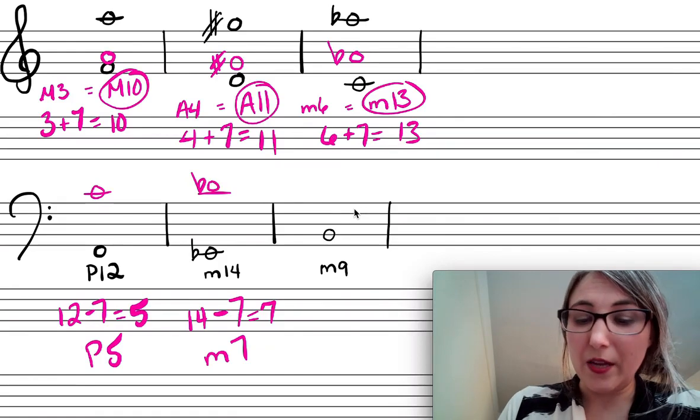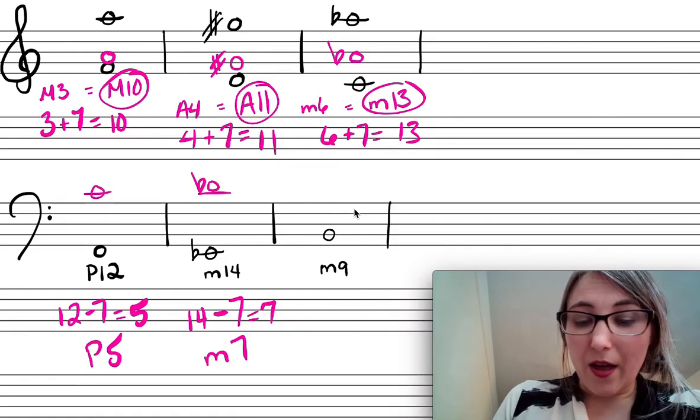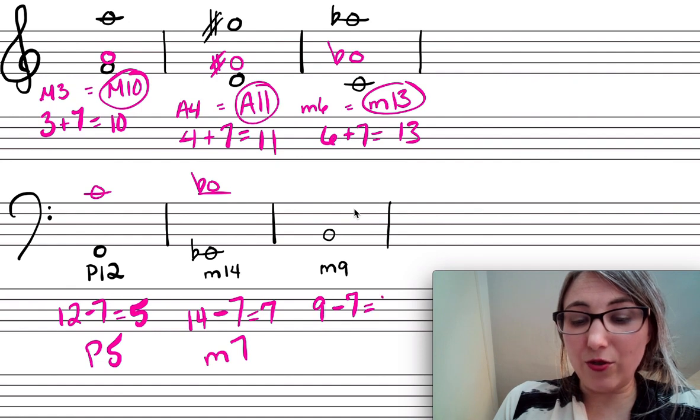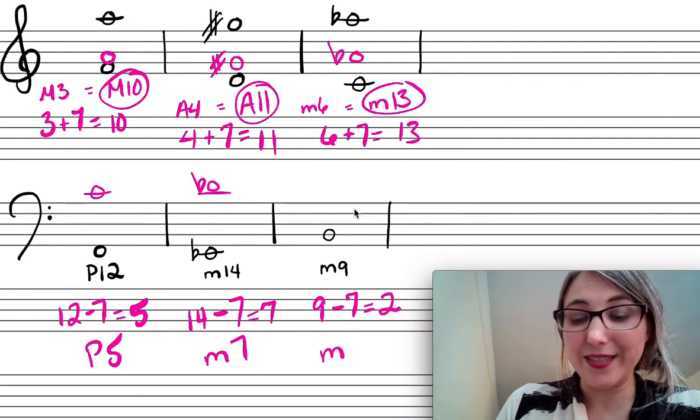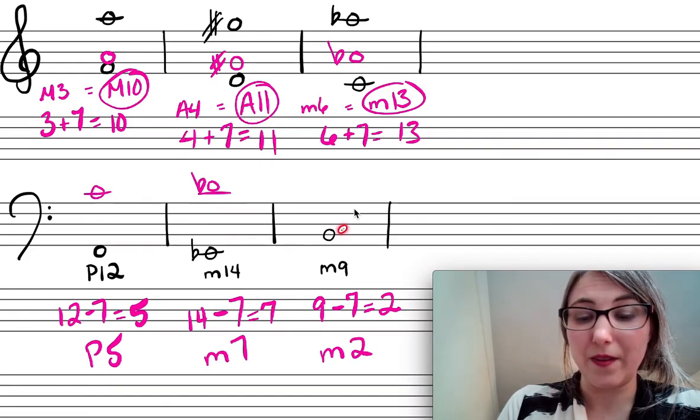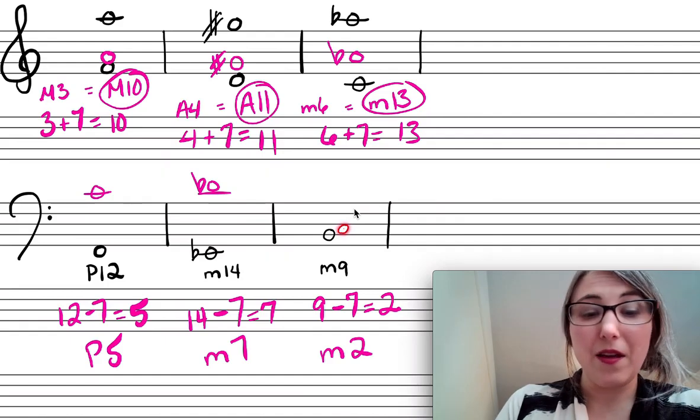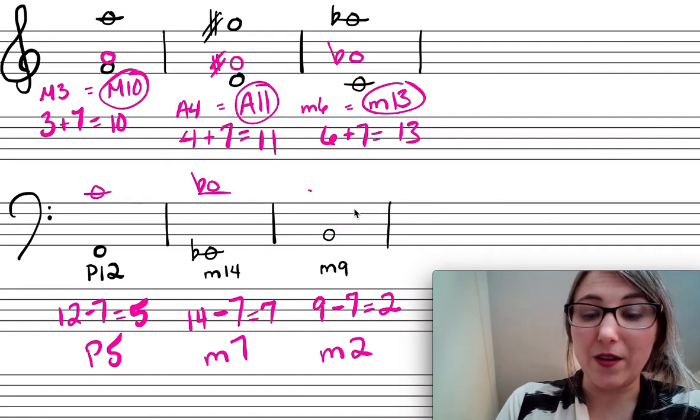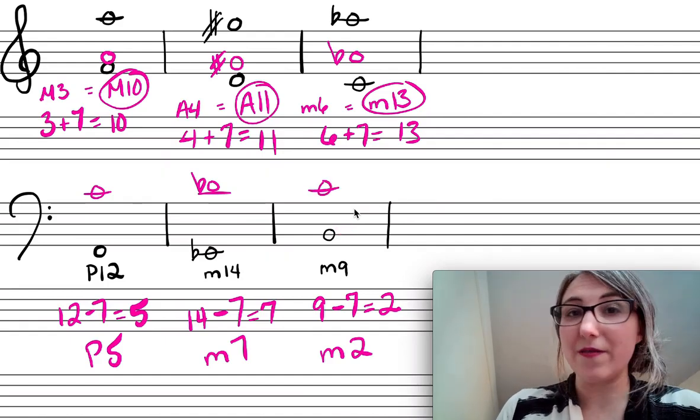One more. One more real quick one. Okay. So minor 9th. So a minor 9th is a 9 minus 7 equals 2. It's the same as a minor 2nd plus an octave. So what's a minor 2nd above B? It'd be a C, right? And then an octave above that would be the C. All right. There it is.